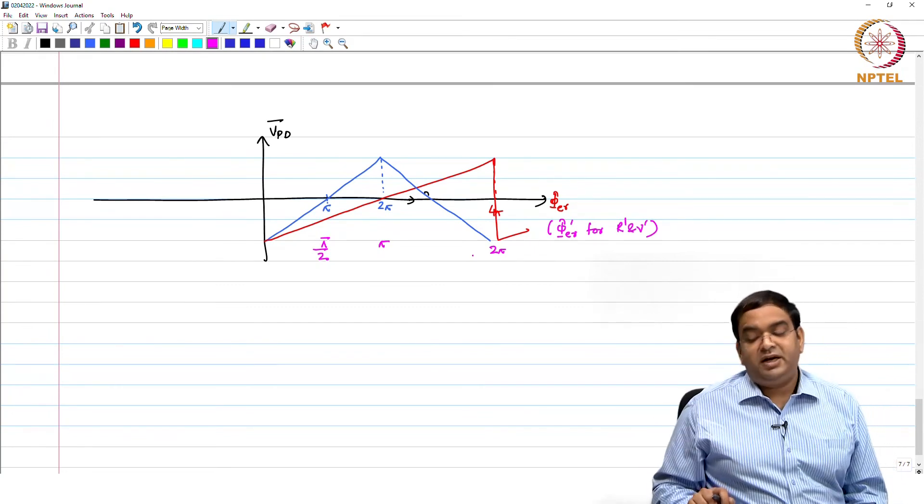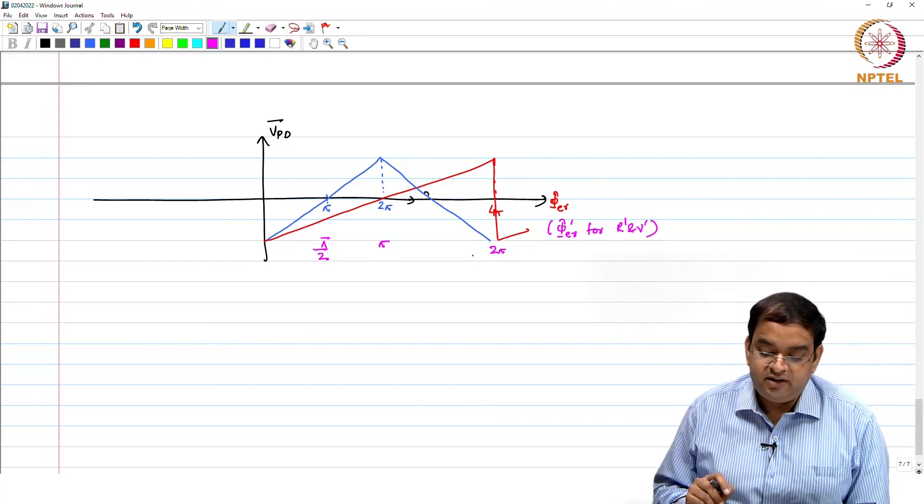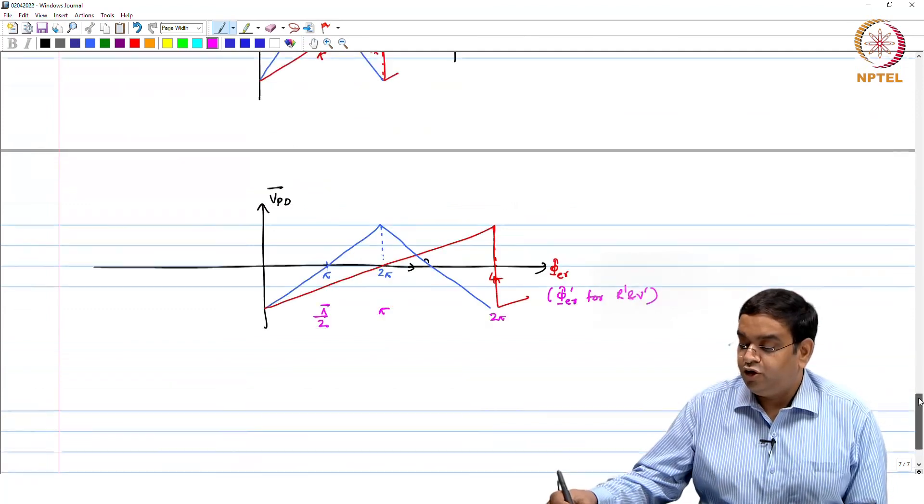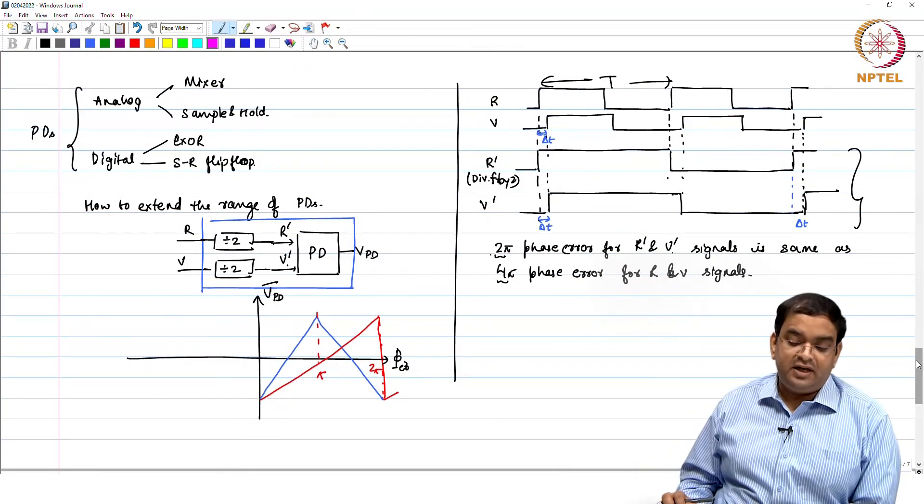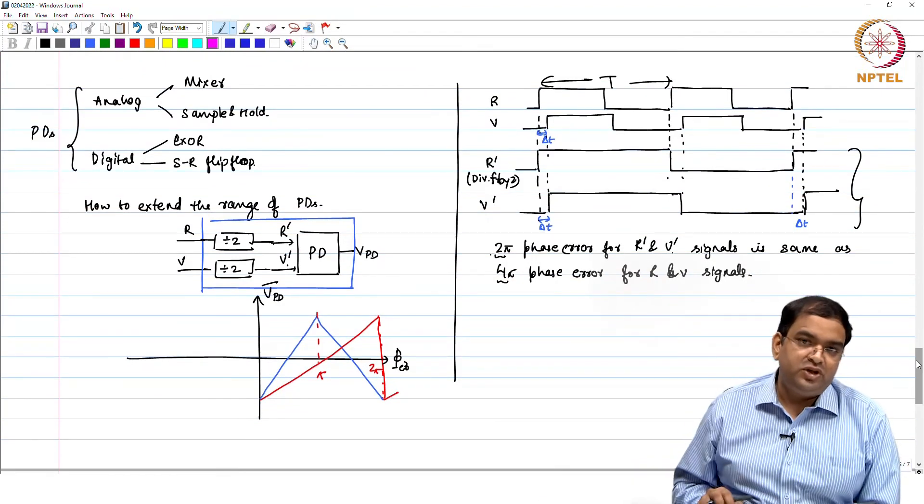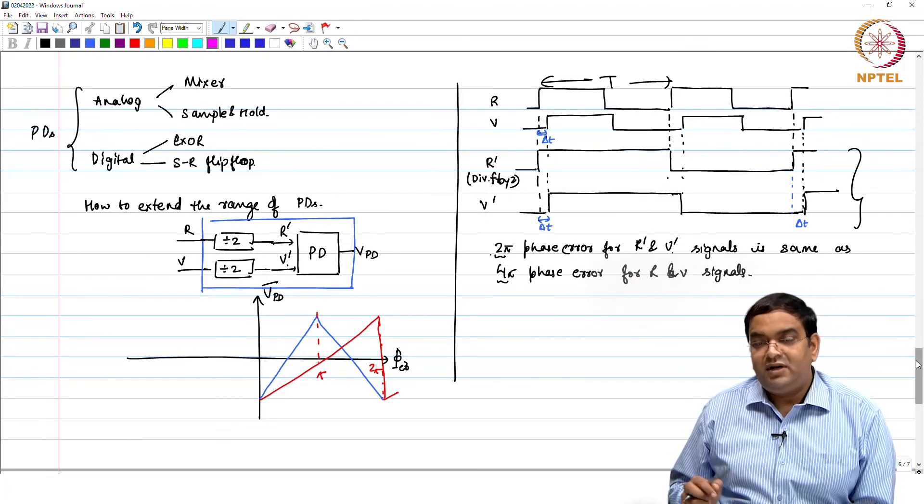Because we are referring with respect to the original signals, that is why what you see here is that the range gets extended. So if you want to extend the linear range of the phase error detector in case of these two digital phase error detectors, you can do it by having divide ratio.